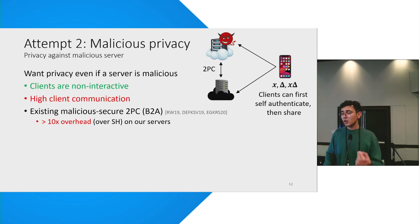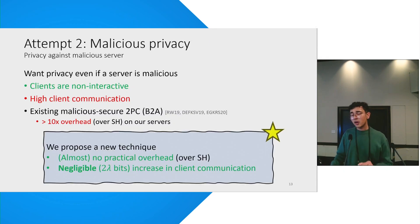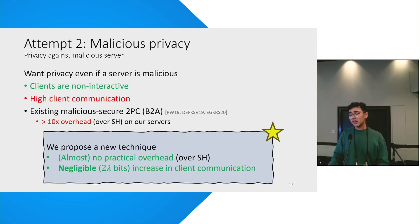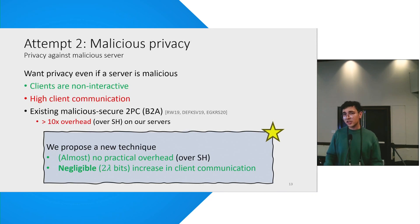How do you achieve malicious privacy while also being concretely efficient? To this end, we propose a new technique — and this is our main result in the paper. We show how in our setting, you can take a semi-honest protocol and with almost no practical overhead, upgrade its guarantees to malicious privacy. In particular, the increase in client communication is negligible — just two lambda bits more communication per client, where lambda is the security parameter.